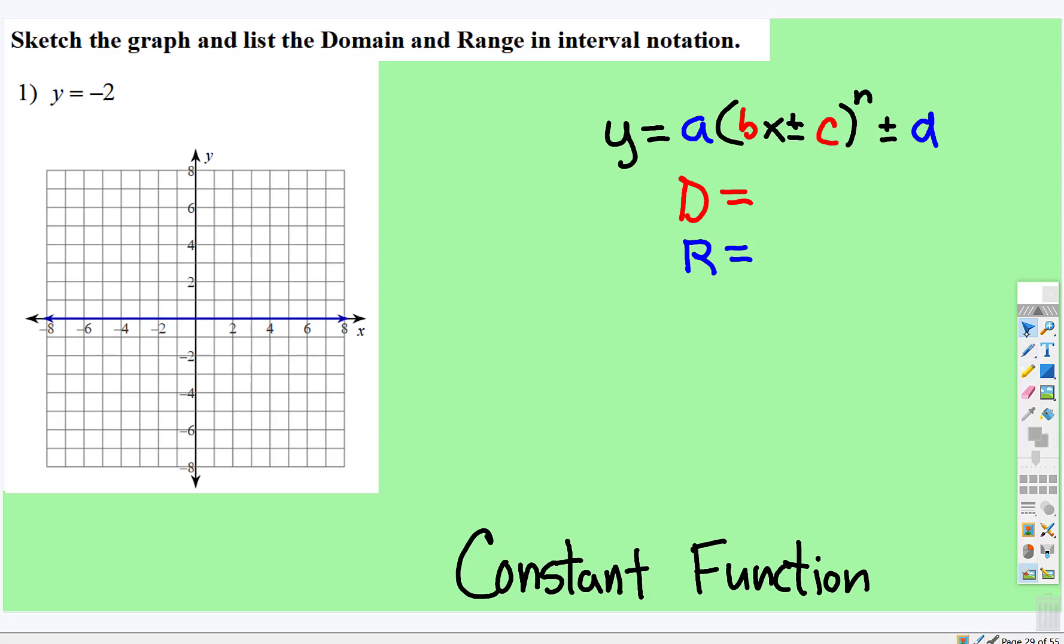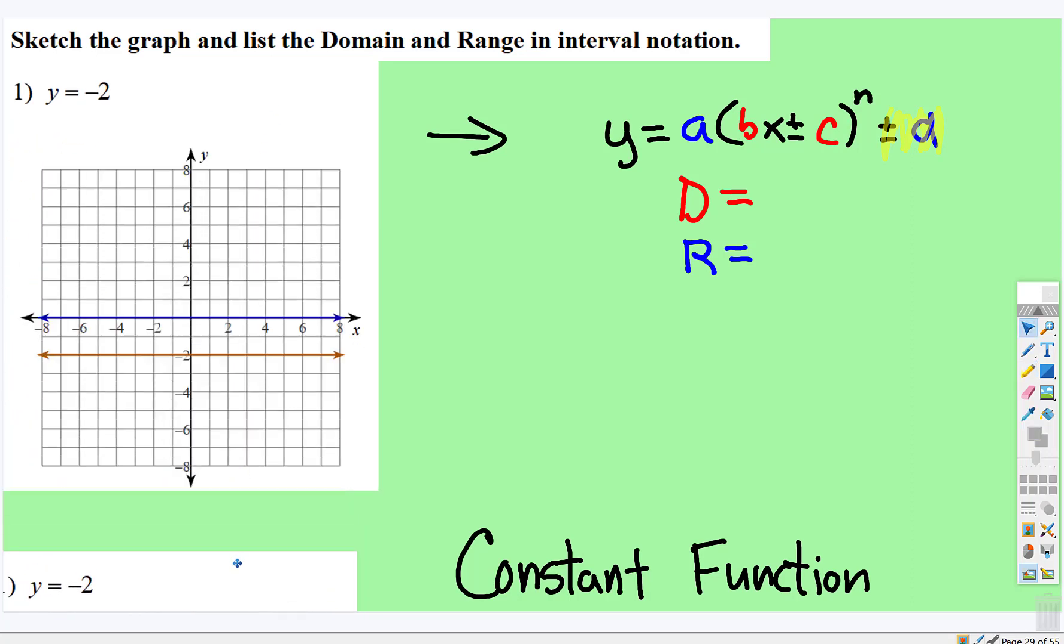So when we look at the basic transformation piece right here, the only piece we have is this. Notice there's no parentheses, so when there's no parentheses it's just the outside numbers. So all we're going to do in this case is move this line down to the entire horizontal line, which is what we did there.